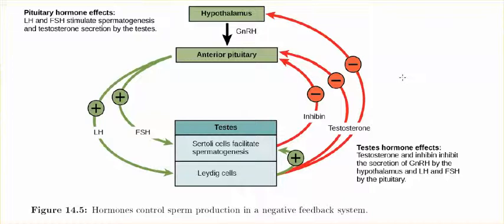Remember, the purpose of negative feedback is to maintain homeostasis. Going back to the endocrine system: the hypothalamus releases GnRH — gonadotropic releasing hormone. That causes the anterior pituitary gland to secrete two hormones, FSH and LH.